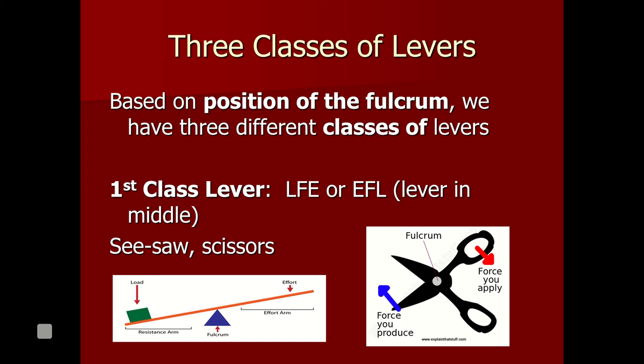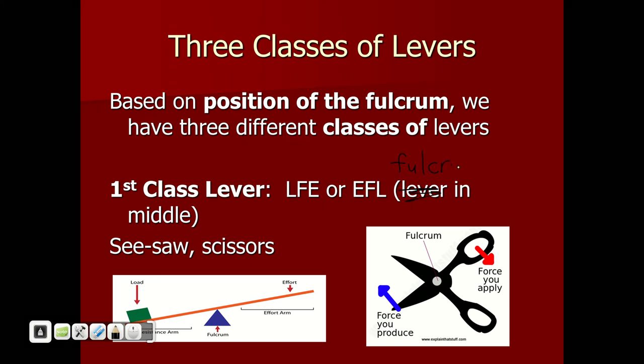The first class lever is the one most people know — your seesaw. The fulcrum is in the middle, with the effort and the load on completely opposite sides. Examples of first class levers include seesaws, scissors, and your elbow — because your effort is your bicep muscle, what's in your hand is the load, and your elbow itself is the fulcrum. Those are all first class levers.